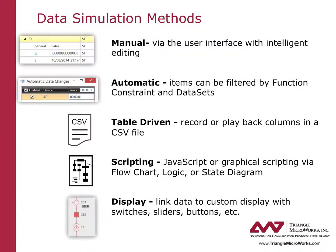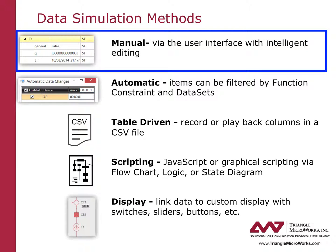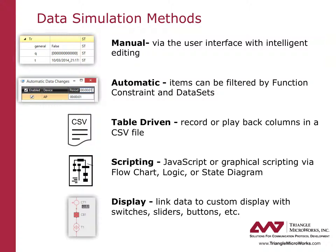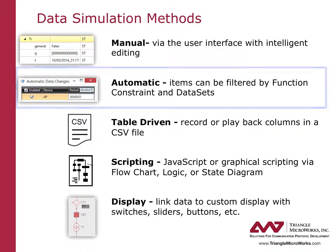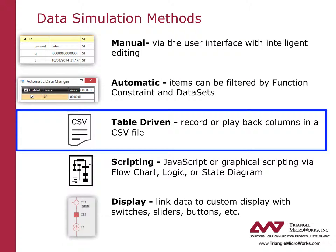There are many options for data simulation. With the manual method, the user can directly change data in the server object model. With the automatic method, DTM can automatically set data to random values on a regular interval. Table-driven data changes allow the user to import and play back states from a CSV file. Each column in the CSV file represents a state and each row represents a data object in the server object model. These CSV files can be captured from real devices using the test tool Hammer.